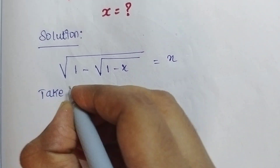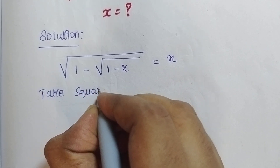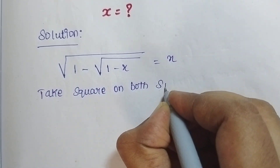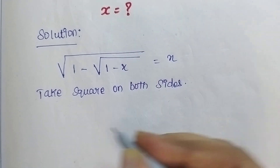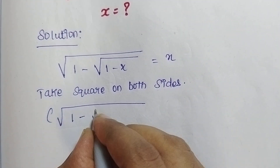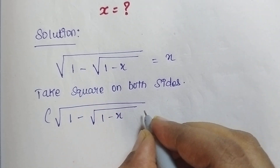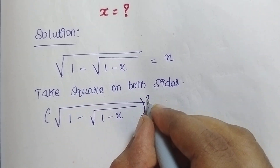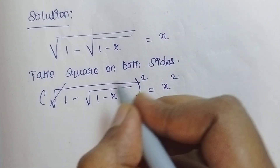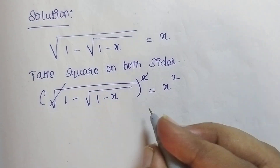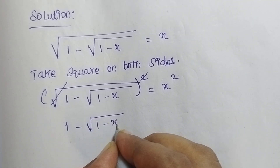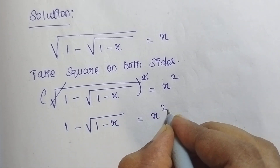I am going to take the square on both sides. So [√(1 - √(1 - x))]² = x². Now this square root and this square cancel. So now I will get 1 - √(1 - x) which is equal to x².